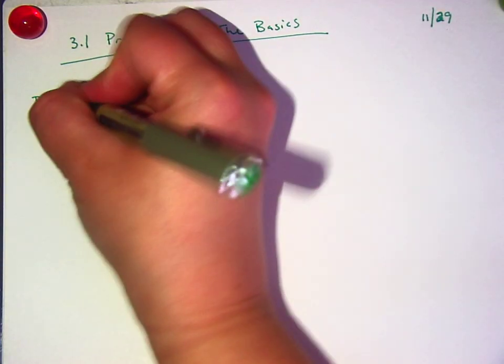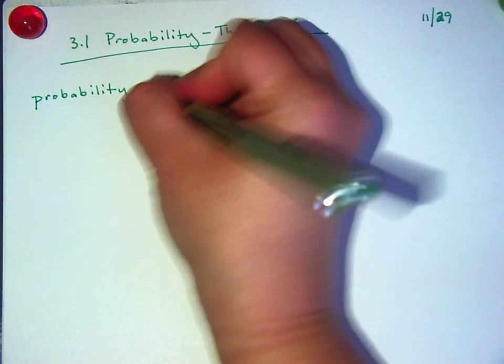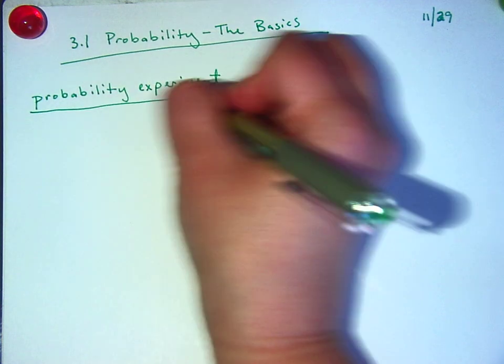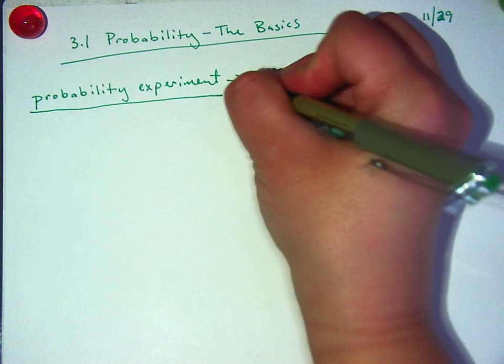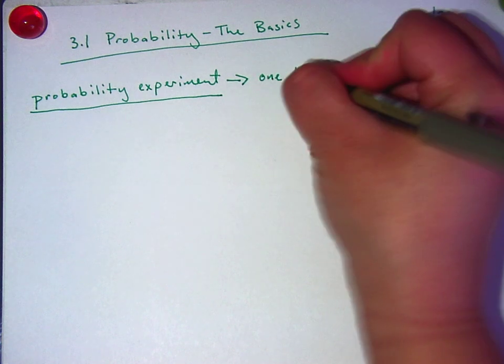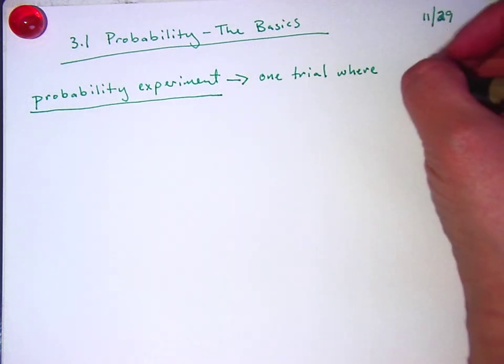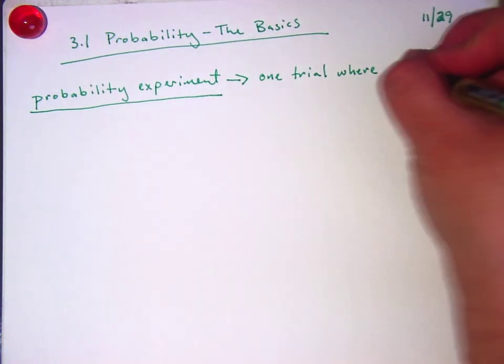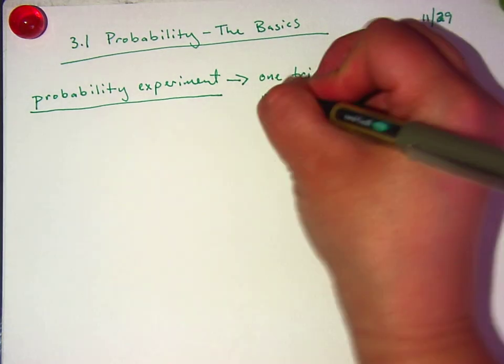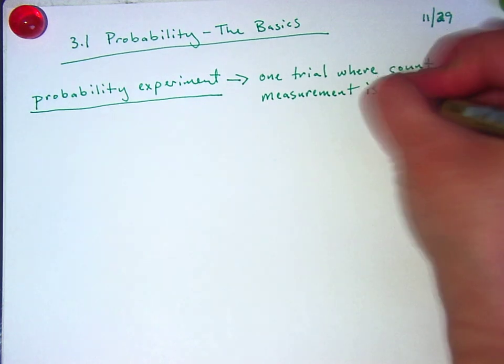So let's start with a probability experiment. This is one trial where you might get a count or measurement and you record it.